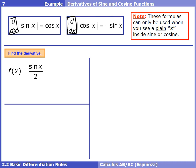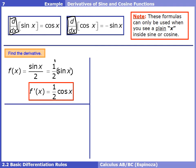Let's find the derivative of sine x over 2. We can rewrite this as (1/2)sine x — since sine x is its own function being divided by 2, or multiplied by 1/2. Using the constant multiple rule, we leave 1/2 in front and take the derivative of sine x, which is cosine x. So f prime of x equals (1/2)cosine x.